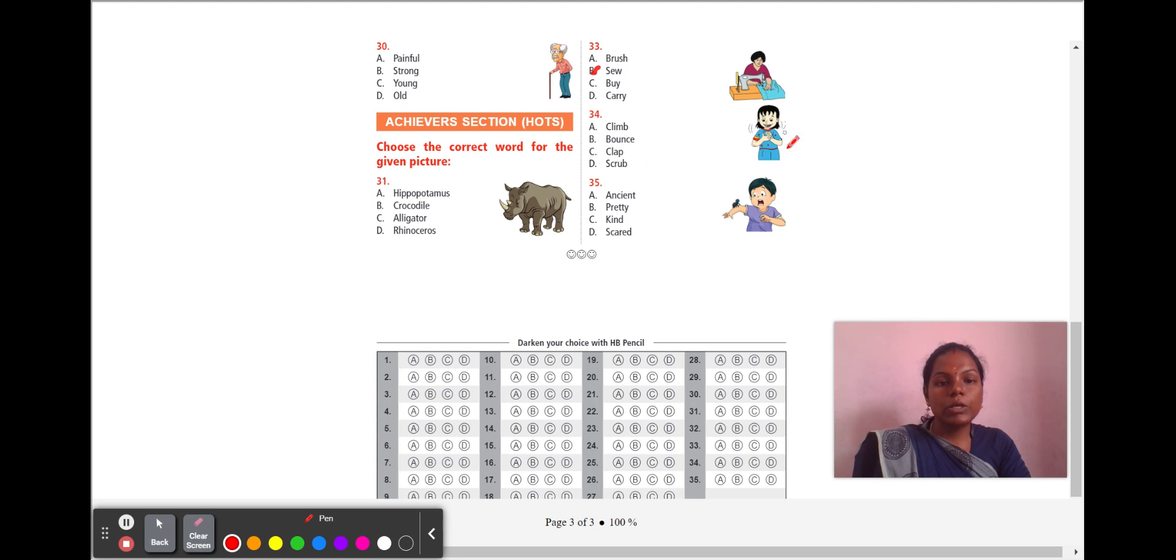Next, 34th question. What is the girl doing with her hands? She is clapping her hands. So, what is the action here? A, climb. B, bounce. C, clap. D, scrub. So, she is clapping her both hands. The answer is C, clap. Here, last question, 35. Look at this boy. There is one insect in his hand. So, what is the reaction of the boy? He is getting panicked whether the insect will bite him. So, try to find the right adjective word for it. A, ancient. B, pretty. C, kind. D, scared. So, he is scared about the insect bite. So, the answer is D, scared.